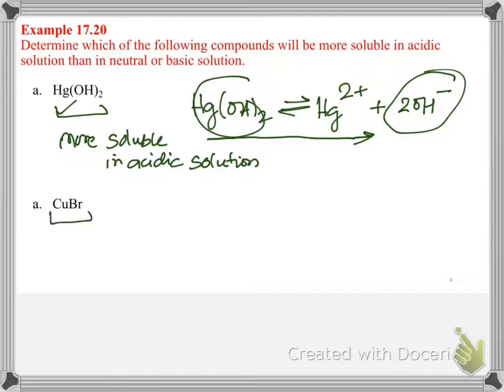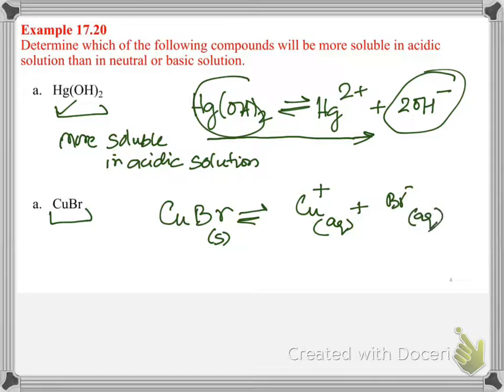Let's take another case, cuprous bromide. Cuprous bromide, again, let's write down the equilibrium. Cu plus aqueous and Br negative. Now, cuprous bromide will not be more soluble in acidic solution. Why is that?